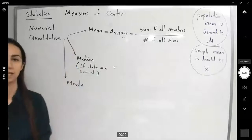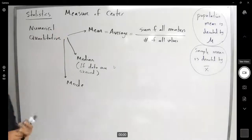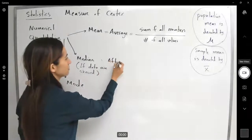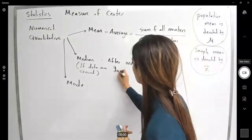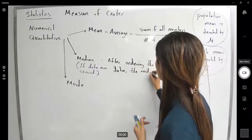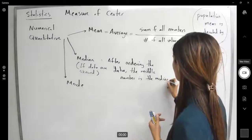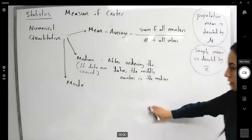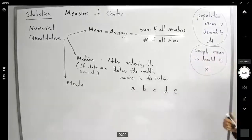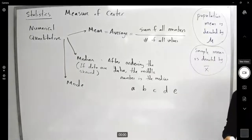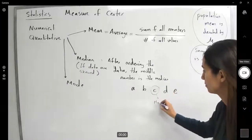What is the definition of median? Median is a measure of center and it is the middle number. After ordering the data, the middle number is the median. For example, if I have a, b, c, d, and e, suppose these numbers are written in order, the median is going to be c.